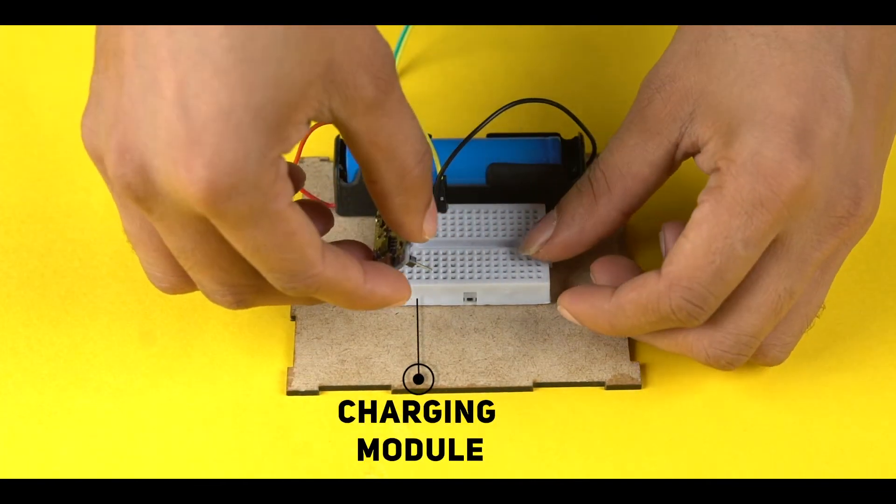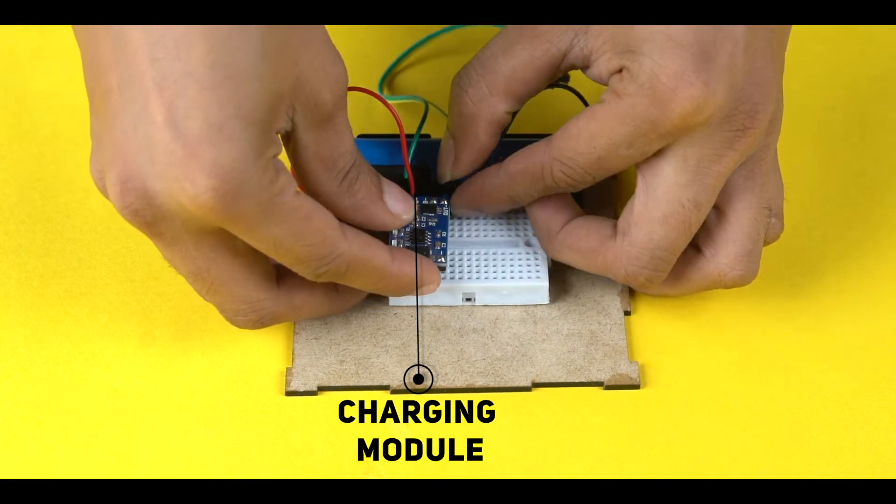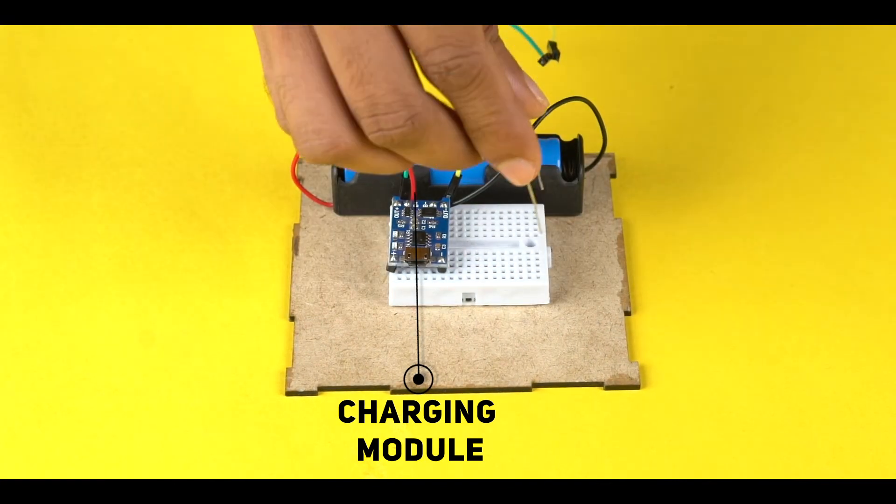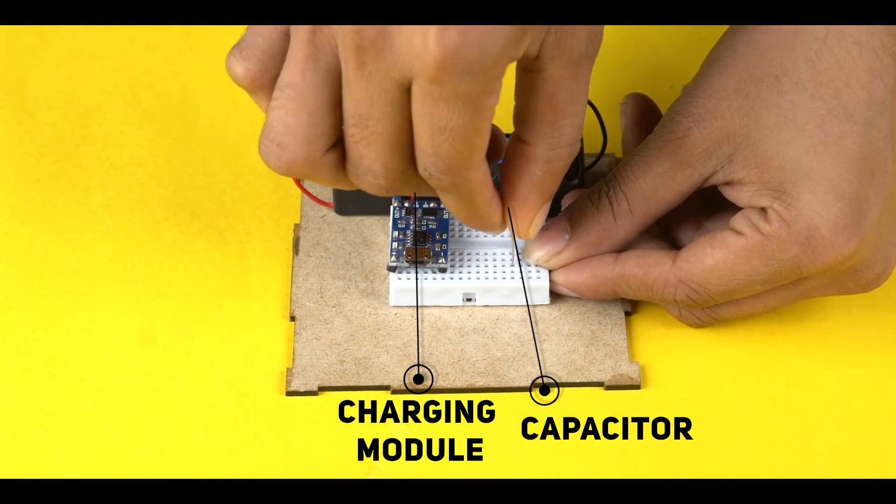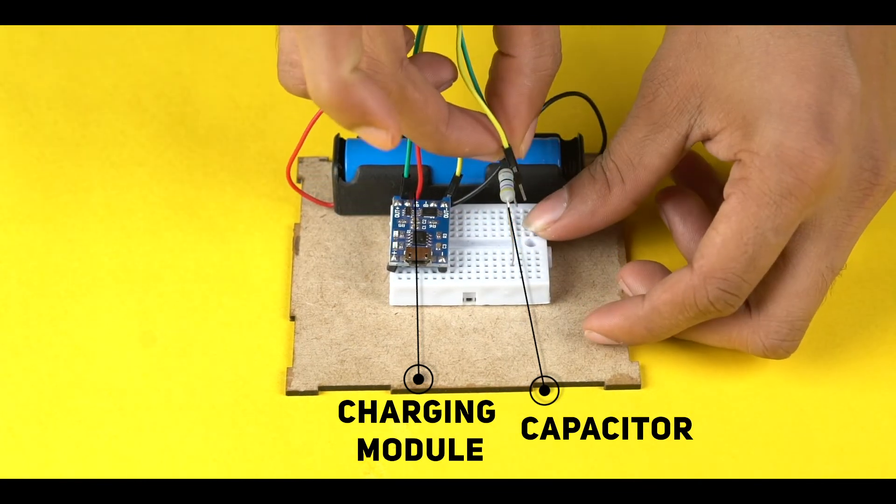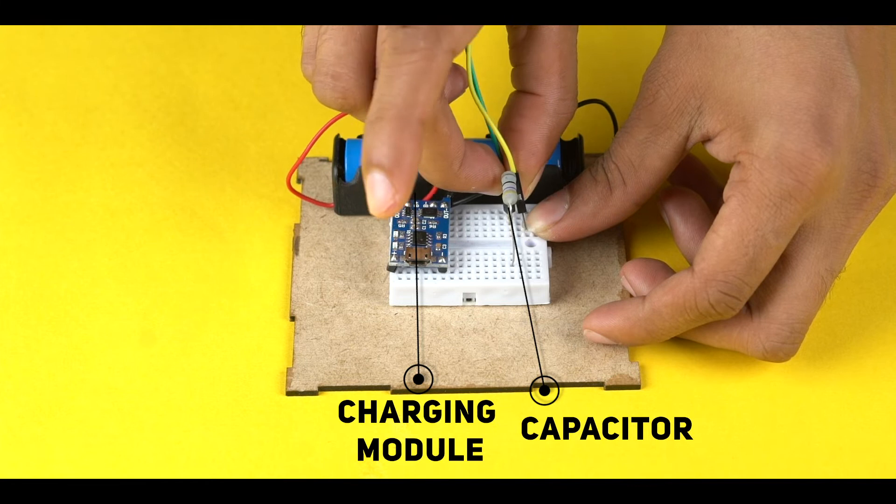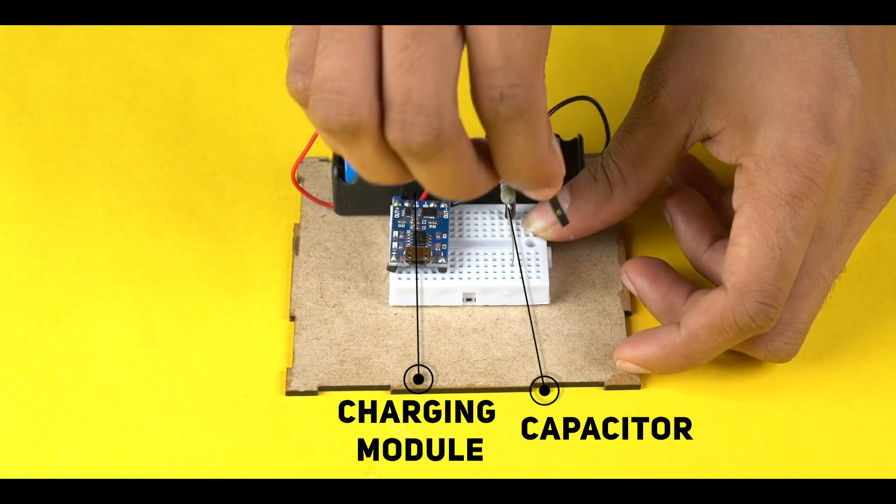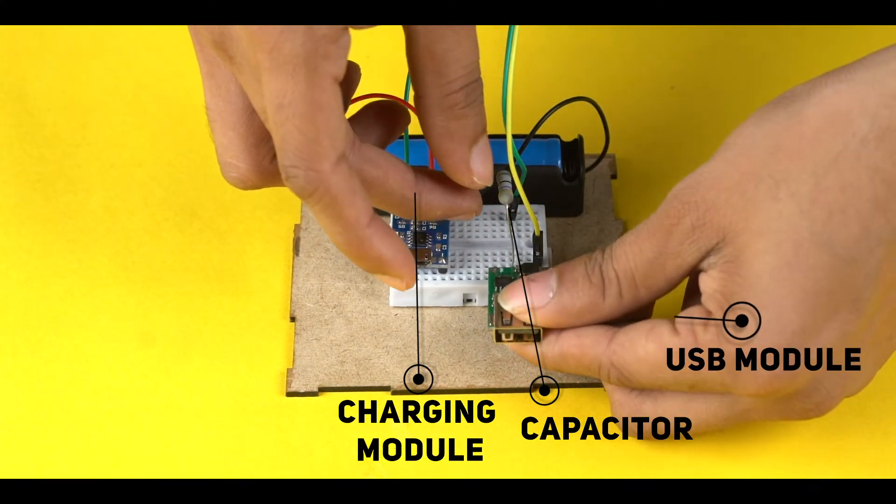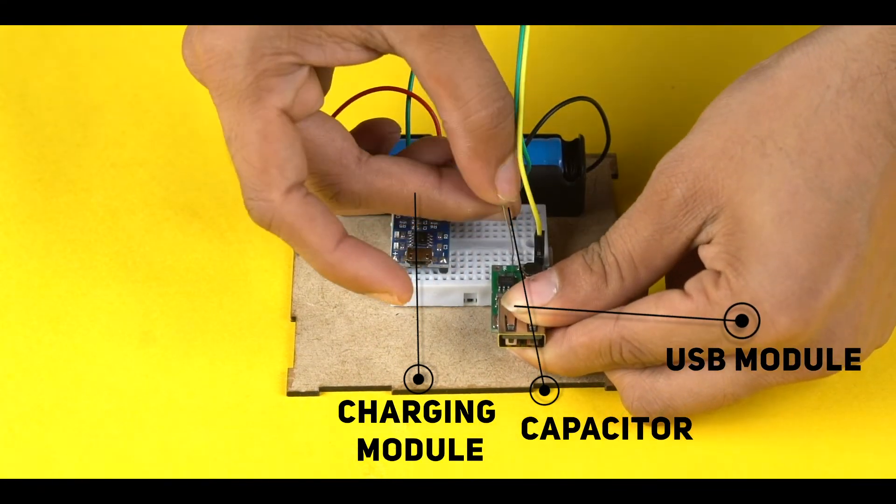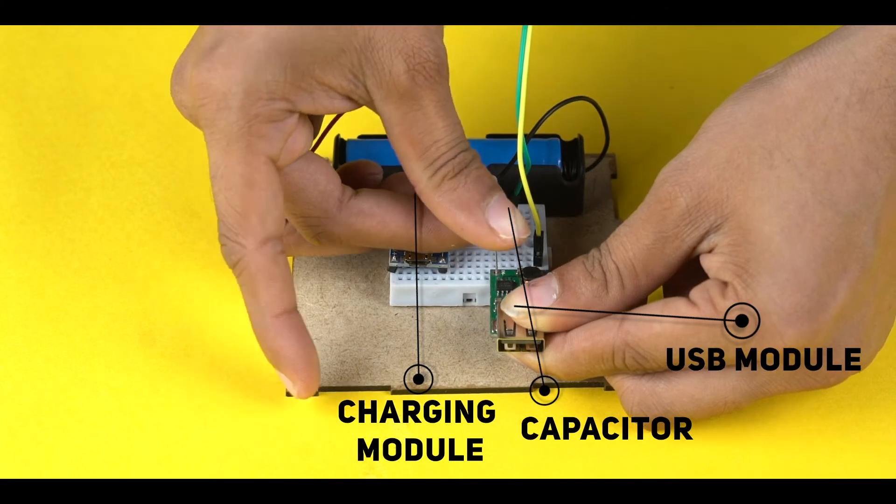Place the battery charger module on the pegboard. Connect the capacitor with the pegboard. Connect the positive wire to the pegboard to be aligned with the capacitor. Connect the negative wire opposite to the capacitor on the pegboard. Place the USB charger module on the pegboard to get the output.